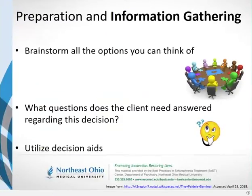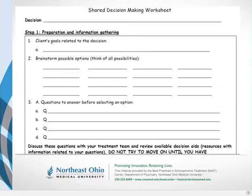During information gathering, once you've identified the core question — for example, should a patient continue the medication they were started on in the hospital — you can start discussing different options: continuing on the medication, switching to a different one, or trying a period off medications. You brainstorm all those options, collect information, and identify the questions that need to be addressed. There are materials from various organizations to support this, helping identify the patient's goal and all potential options, as well as the questions important to consider before making a decision.